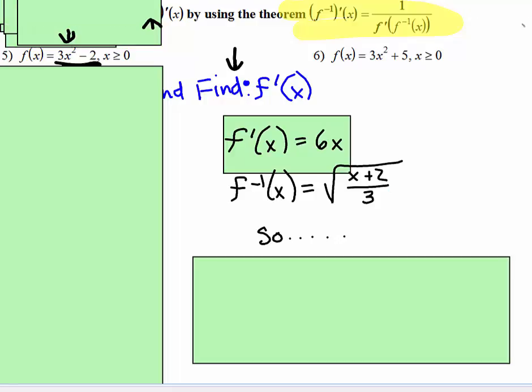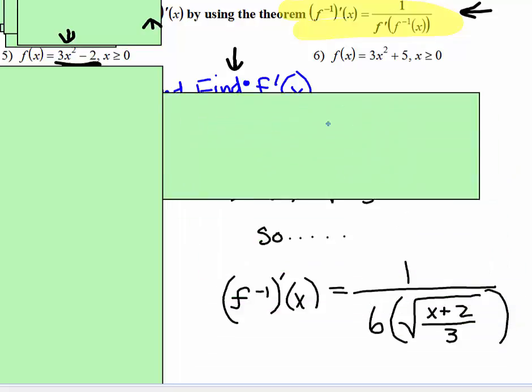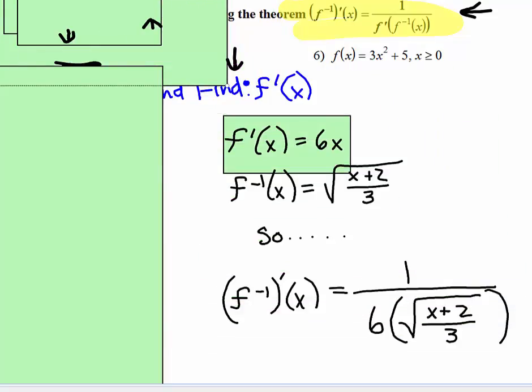So when we plug all that into here, 1 over 6x, and instead of the x, we plug in the inverse. So the derivative of the inverse, it's 1 over 6x, but where x goes, that's where you put the inverse, and this was the inverse, so let's try one more.